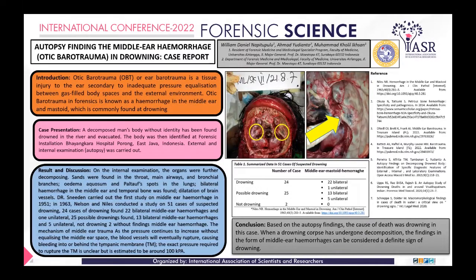The mechanism of middle ear trauma involves pressure that continues to increase without equalization in the middle ear space, causing blood vessels to eventually rupture and bleed into or behind the tympanic membrane. The exact pressure required to rupture the membrane is unclear but is estimated to be around 100 kilopascals. A picture of the middle ear hemorrhage can be seen here.